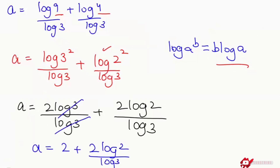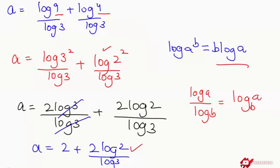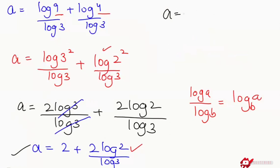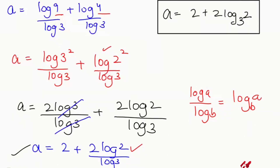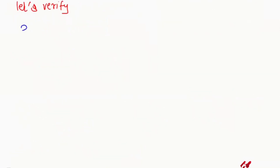Now I'm going to apply the change-of-base property that log of a over log of b can be written as log base b of a. So this equation turns to a equals 2 plus 2 log base 3 of 2. So this is our final answer. Now I will verify my answer.